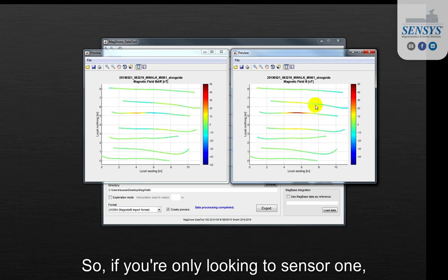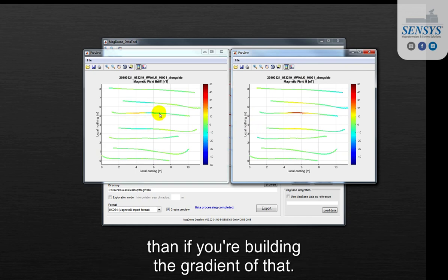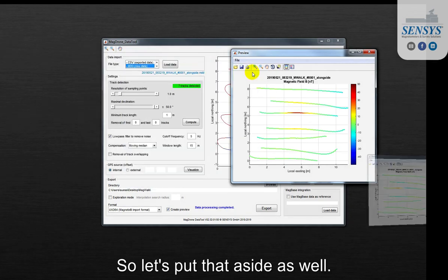You can see the differences. If you are only looking to sensor one the object here seems more visible than if you are building the gradient of that. So let's put that aside as well.